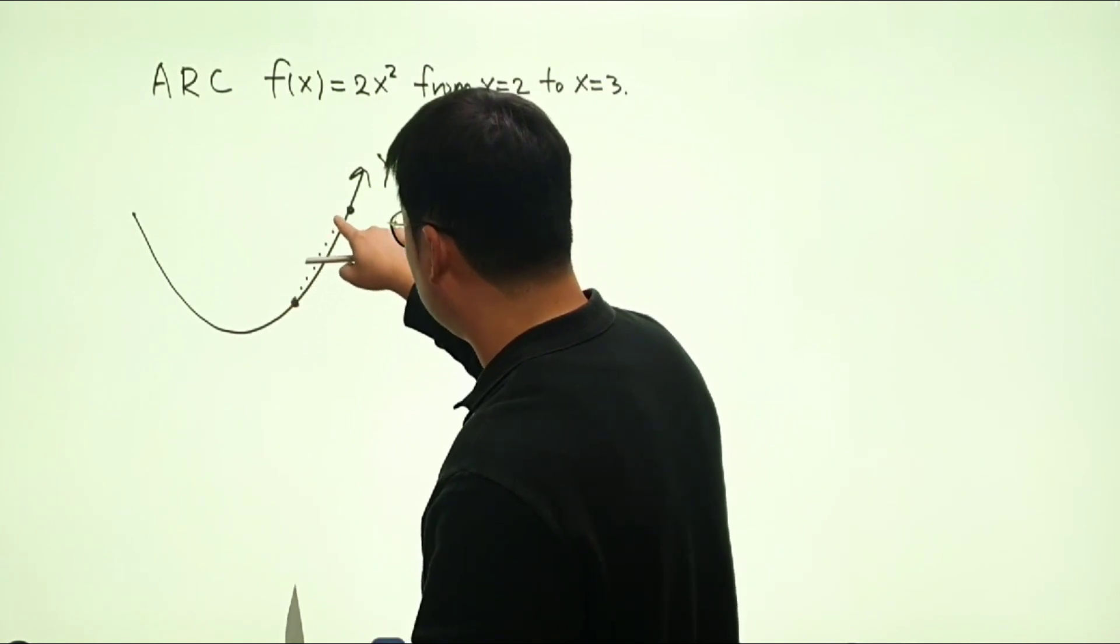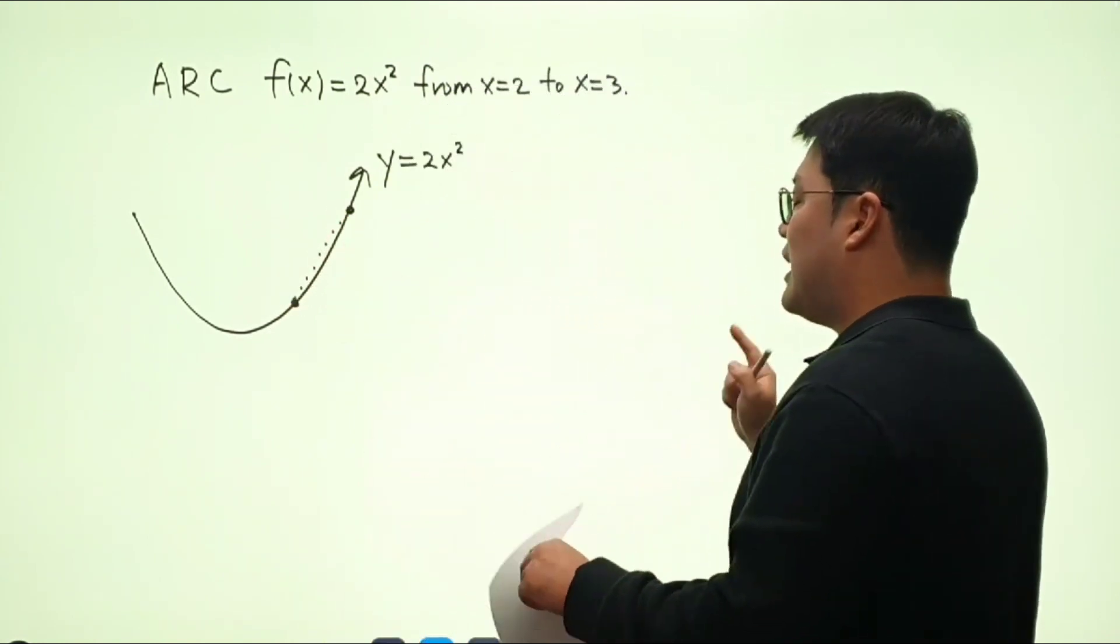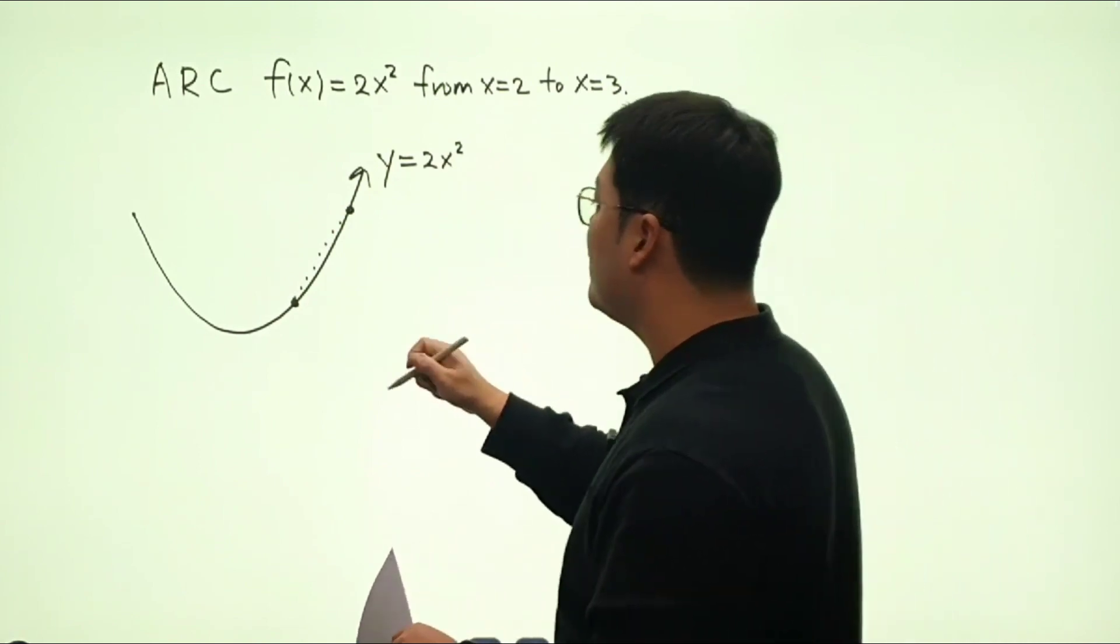So it's going to be the slope of that line segment. And it's not the tangent line slope. It's going to be the secant line slope.